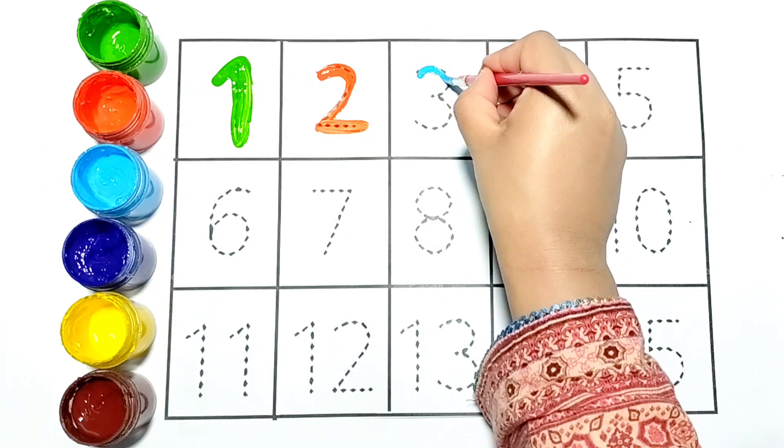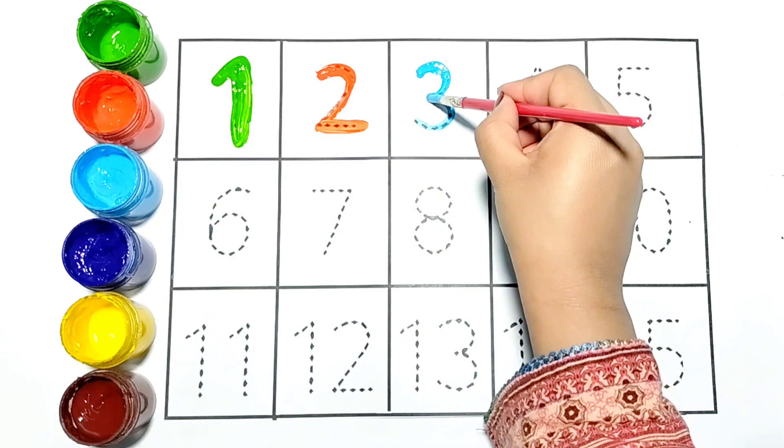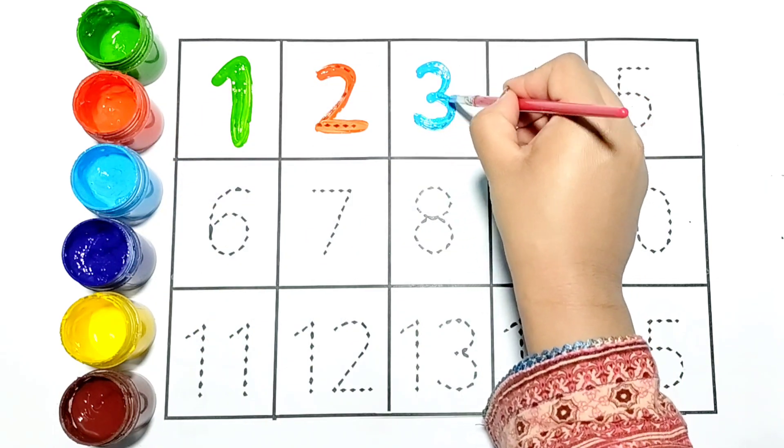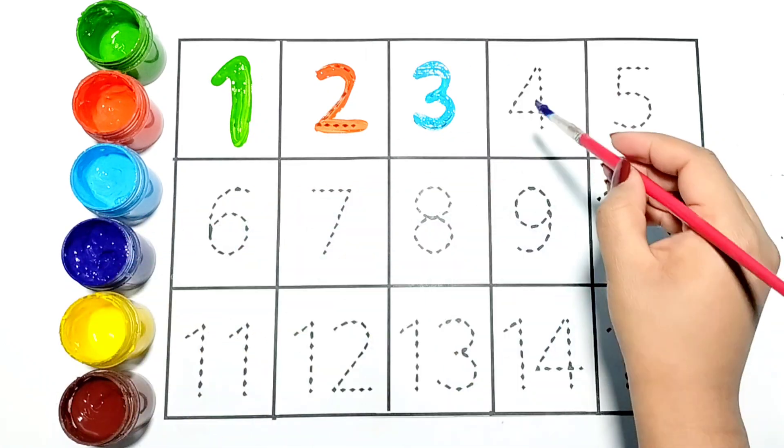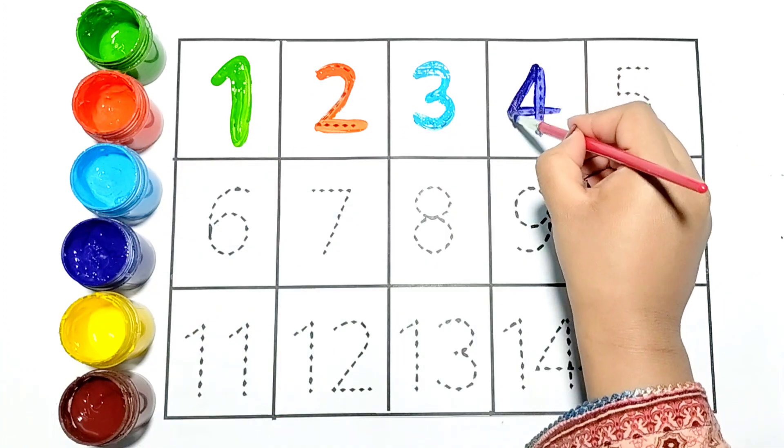This is number 3. It is in blue color. Do you know the next number? It is number 4. It is in purple color.